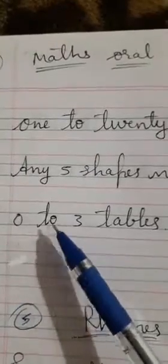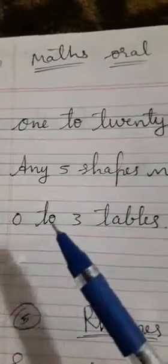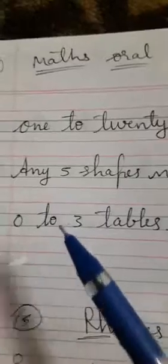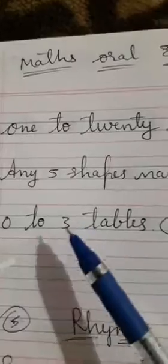Zero ones are zero, zero twos are zero, zero threes are zero. This type: one ones are one, one twos are two, one threes are three. Two ones are two, two twos are four, two threes are six. Three ones are three, three twos are six, three threes are nine. This type - zero to three tables, two and half marks.